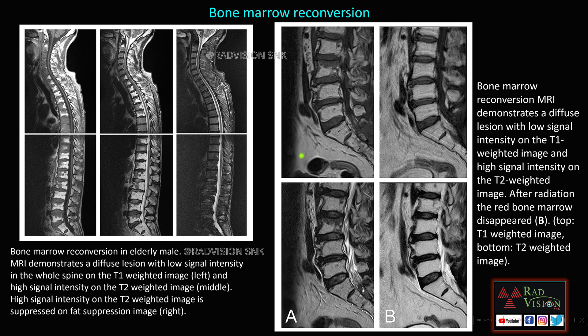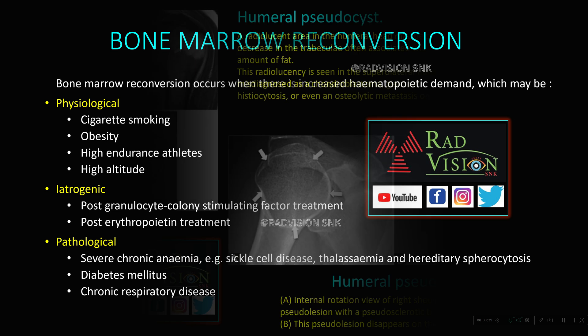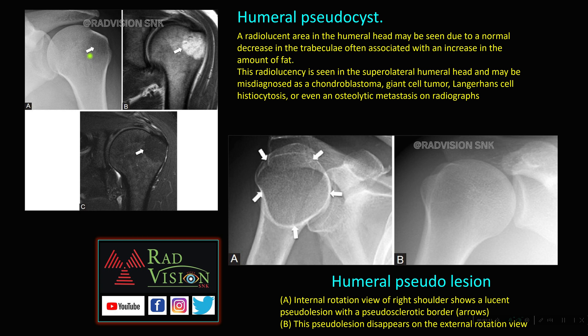Following radiation therapy, you can see complete reversion of red marrow into yellow marrow — that's why normal signal is reverted back. Bone marrow reconversion can be physiological — seen with cigarette smoking, obesity, high-endurance athletes, or high altitude. It can also be iatrogenic — post granulocyte colony-stimulating factor treatment or post erythropoietin treatment. Pathologically it can be seen in anemia, sickle cell disease, thalassemia, hereditary spherocytosis, diabetes mellitus, and chronic respiratory diseases.